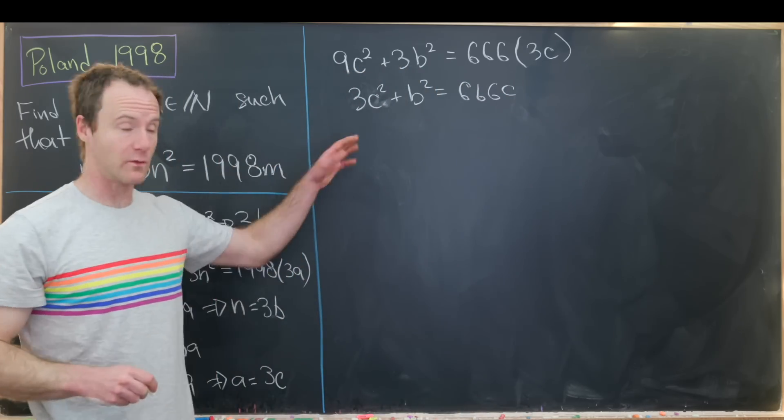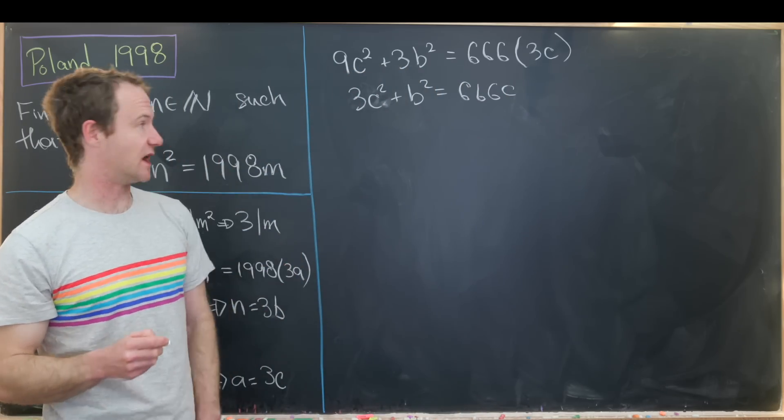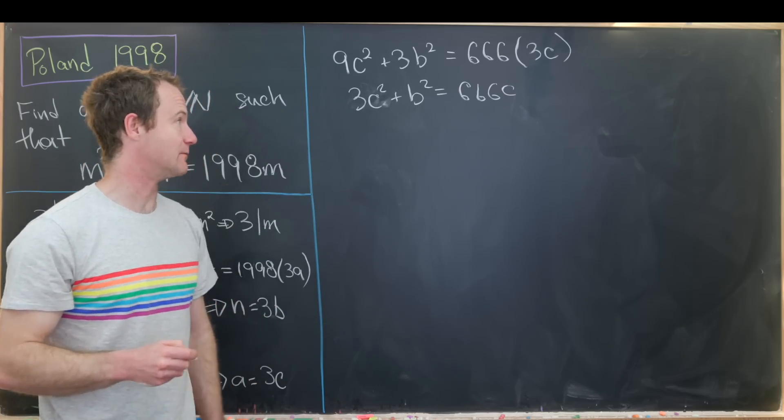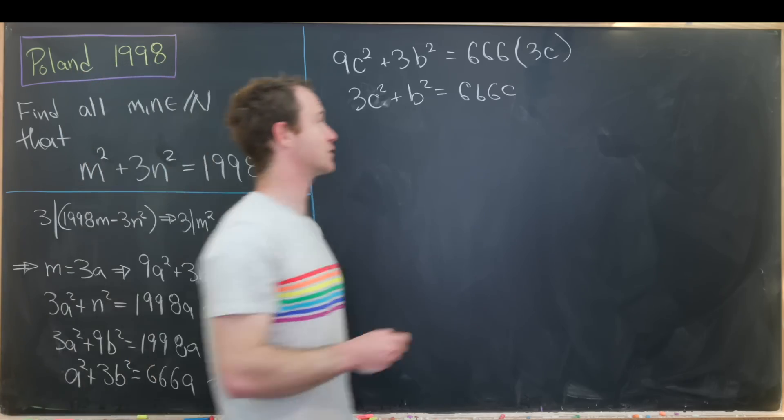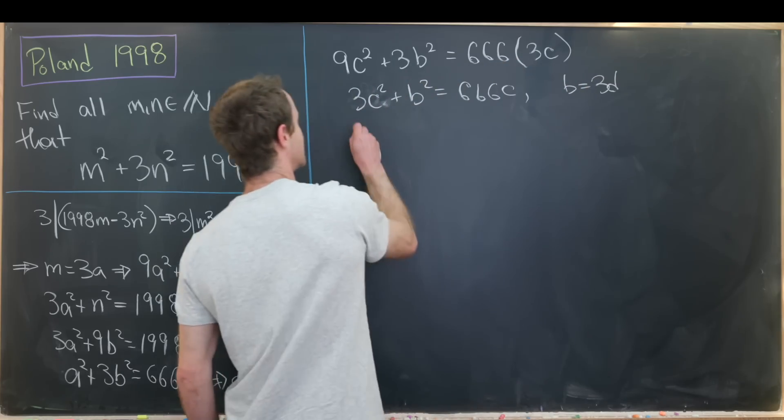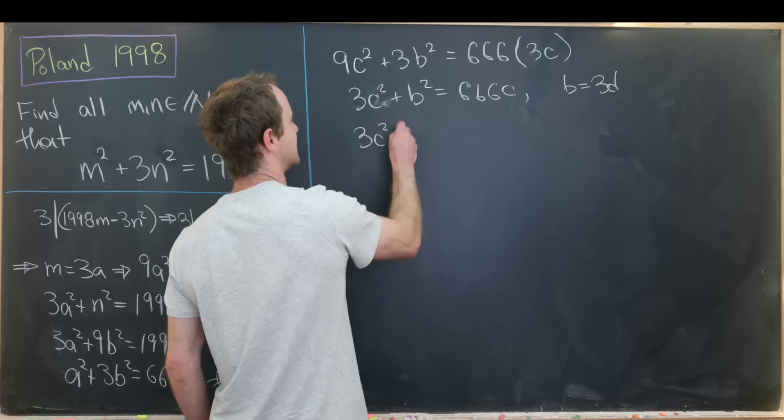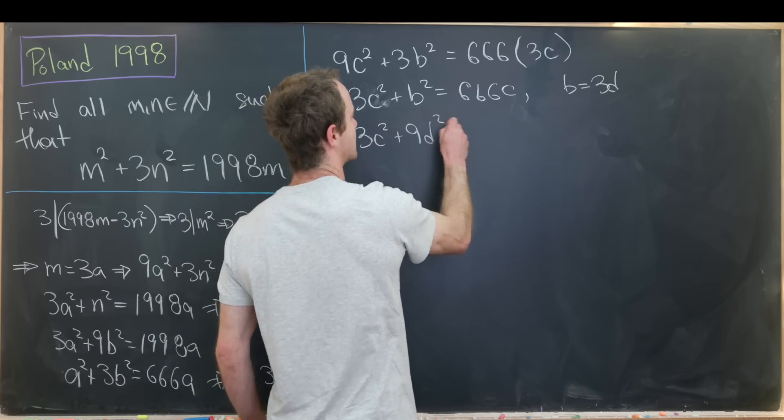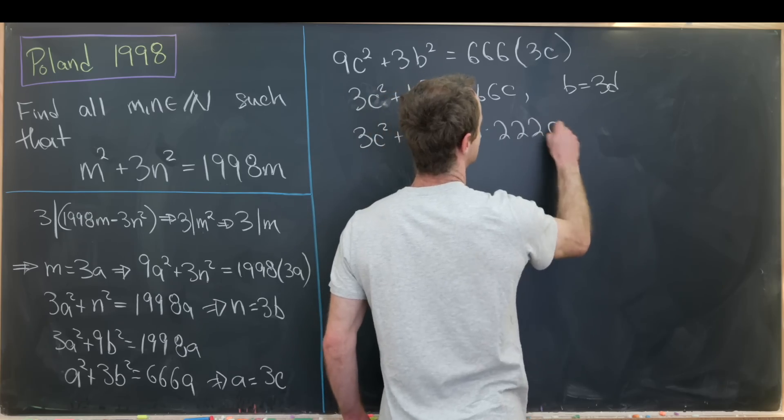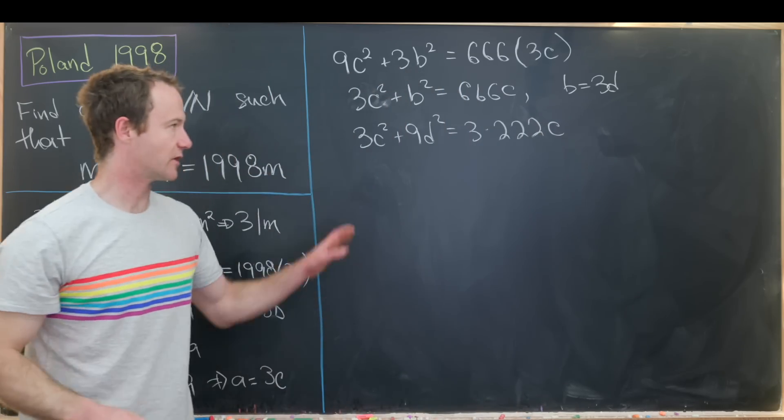Now canceling the 3 again will give us 3c squared plus b squared equals 666c. But now one more time, or maybe more than one more time, we'll see that b is equal to a multiple of 3 as well. So we'll set b equal to 3d and write this as 3c squared plus 9d squared equals 3 times 222c.